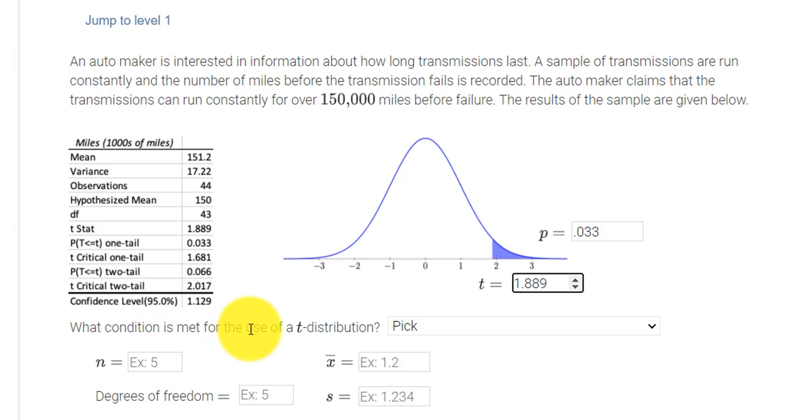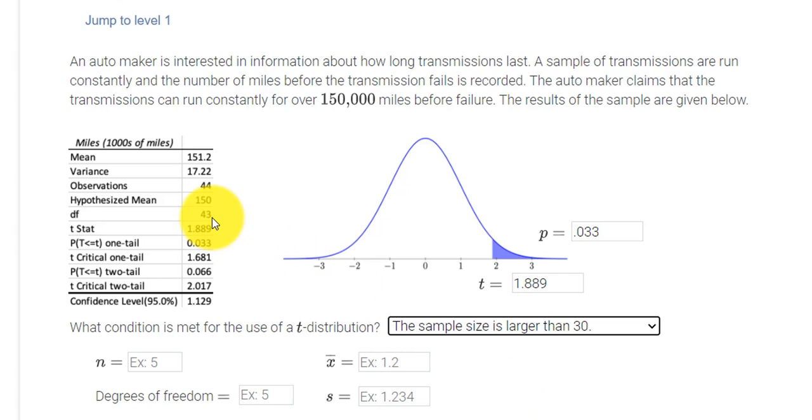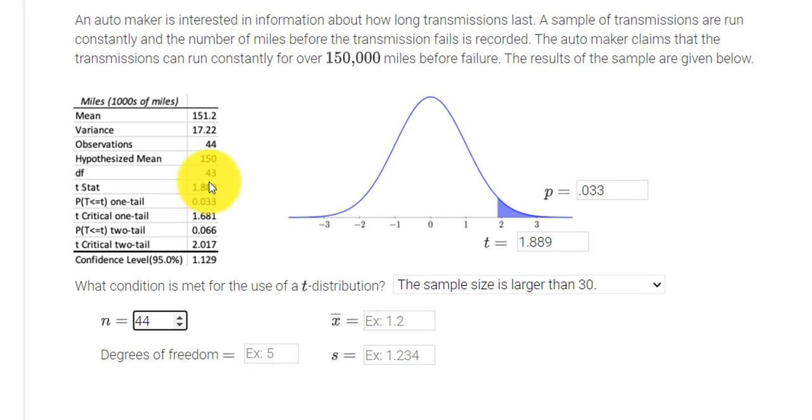What condition is met for the T distribution? I'm looking at my degrees of freedom and it's 43. So that means my N is 44. So my sample size is larger than 30. How do I know that? Well, if the degrees of freedom is 43, we know N minus one is your degrees of freedom. So my N has to be 44, and my degrees of freedom would be one less, which is 43.